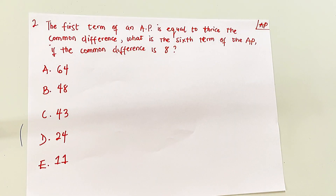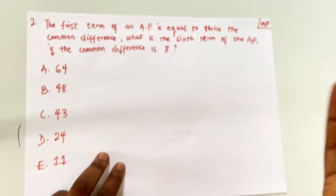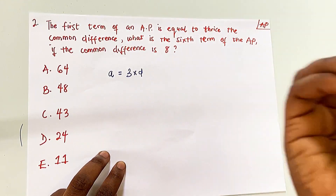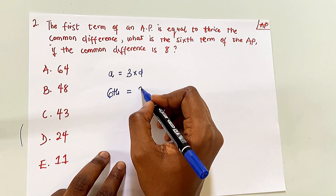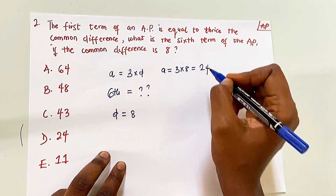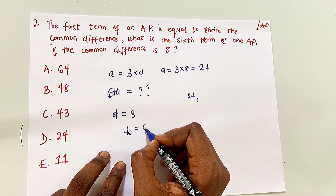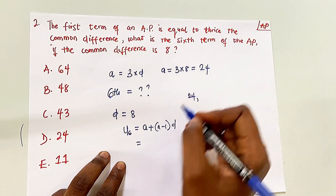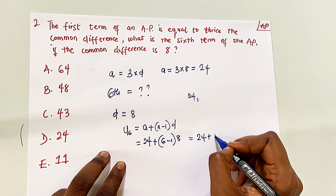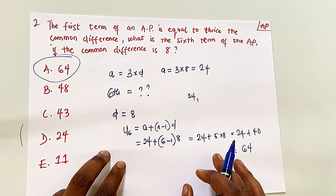Question 2 is a word problem. It says the first term of an AP is equal to thrice the common difference, so a = 3d. We're told d = 8, therefore a = 3 × 8 = 24. To find the 6th term: u_6 = a + (n−1)d = 24 + (6−1) × 8 = 24 + 5 × 8 = 24 + 40 = 64.